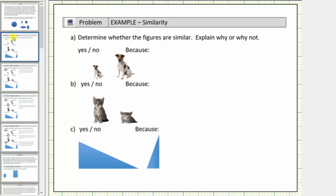Let's look at some more examples. We are asked to determine whether the figures are similar, explain why or why not. So looking at the two figures of the dog, we need to determine if these two dogs represent the same shape. Notice how the dogs are the same shape. The second dog is a larger scale of the first dog.